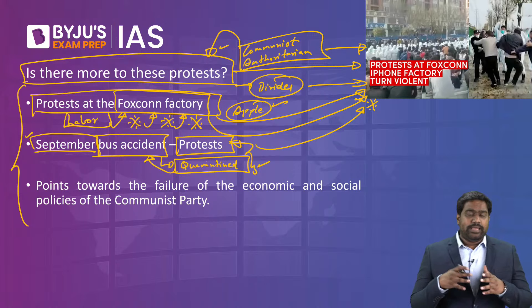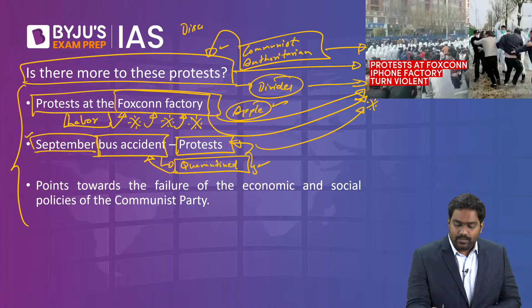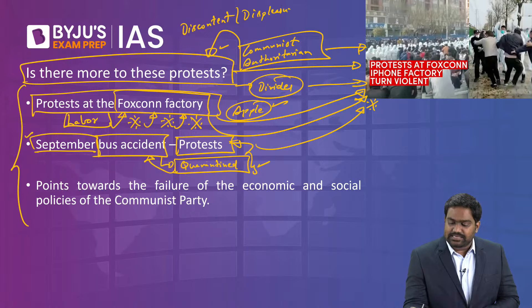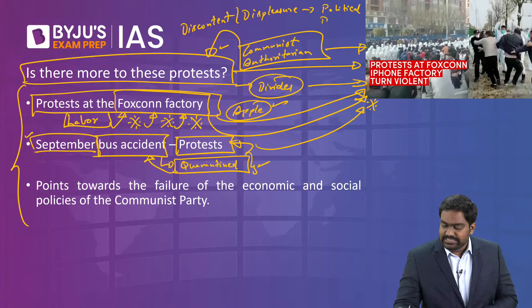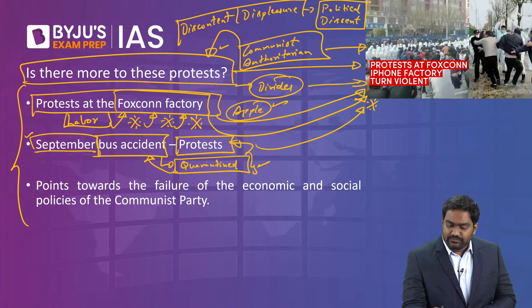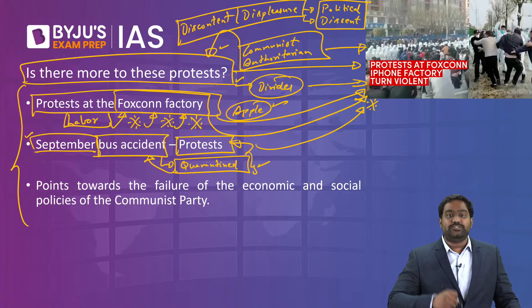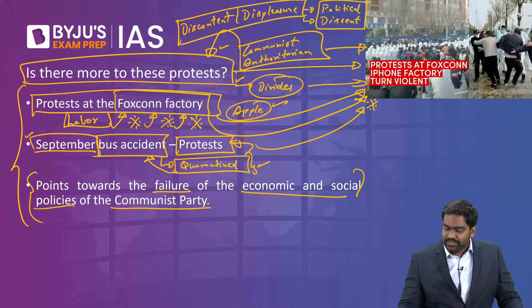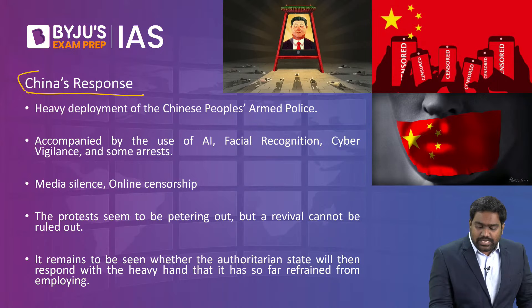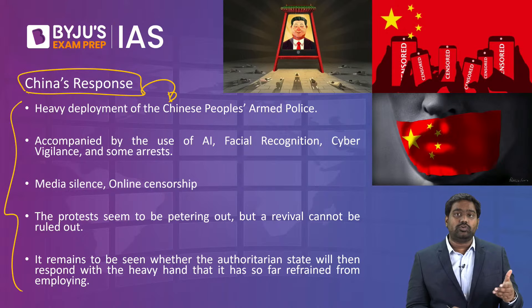Many experts believe this indicates a wider discontent against the political policies of the PRC. This could be seen as political dissent — not just against the zero COVID policy, but over the entire manner in which China has been handling the pandemic, the economy, and the basic rights of its people. It points towards the failure of its economic and social policies, as Western experts are indicating. In response, usually an authoritarian state uses brute force to curb any protest, but in this context China has been a little cautious.